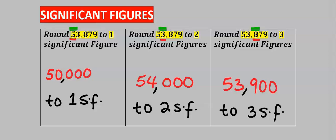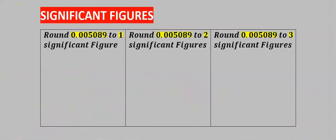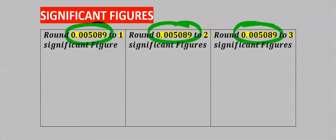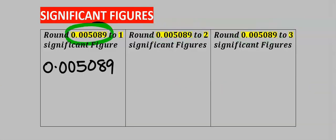Remember, in this question there is no decimal. Next, let's consider each of these questions. In this question, this is the 1st significant figure, the 2nd significant figure, the 3rd significant figure, and the 4th significant figure.